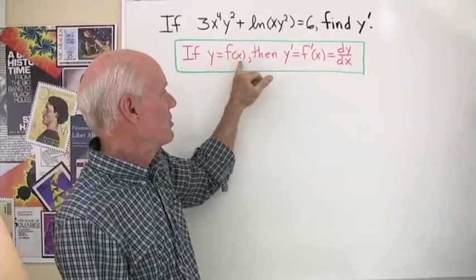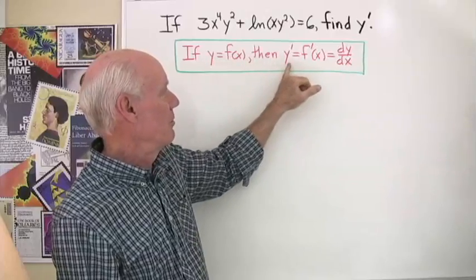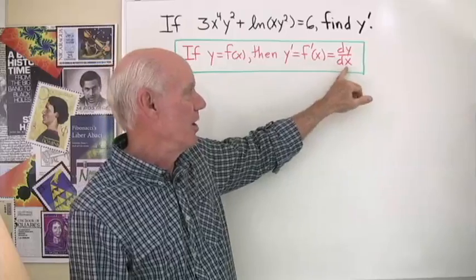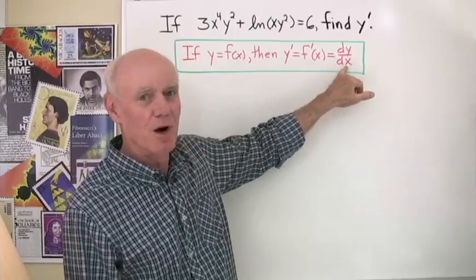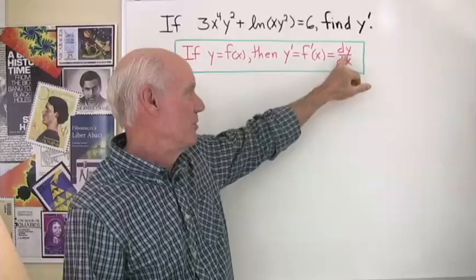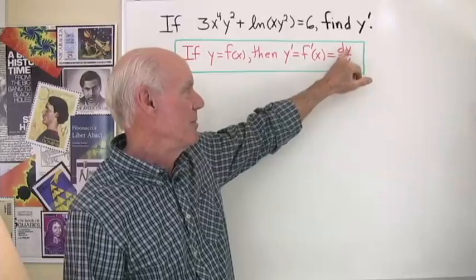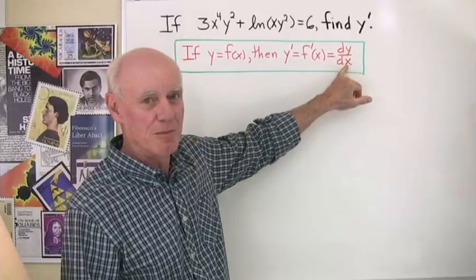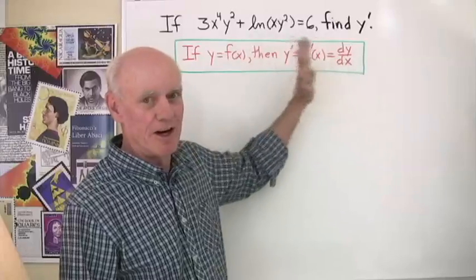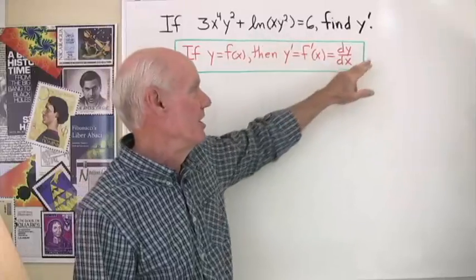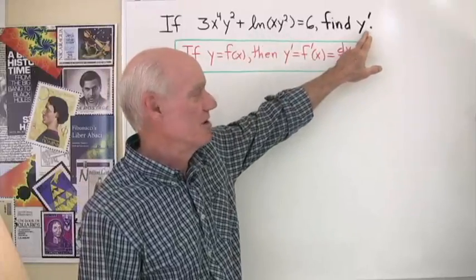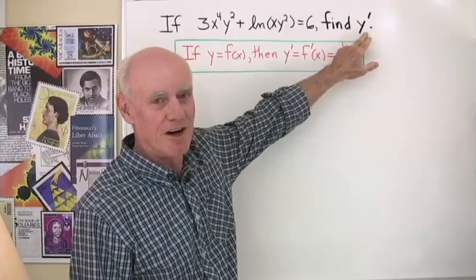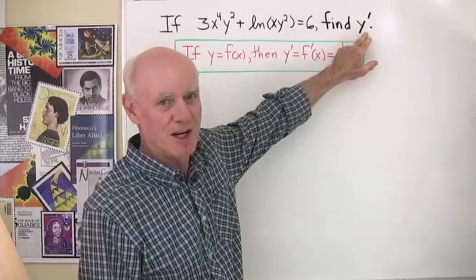So if y is a function of x, then whenever we say find y prime or f prime of x, we always mean dy/dx — the derivative of the dependent variable with respect to the independent variable unless we have other information. So when we see y prime here, we mean the derivative of y with respect to x.